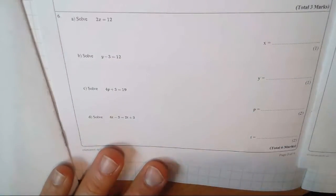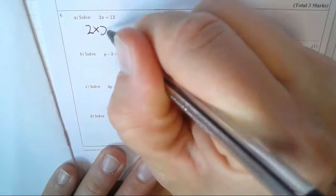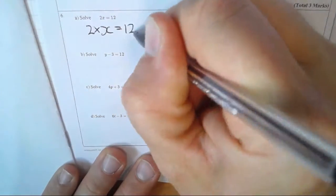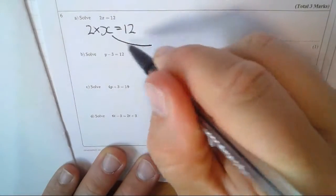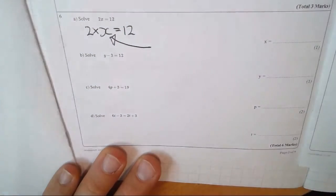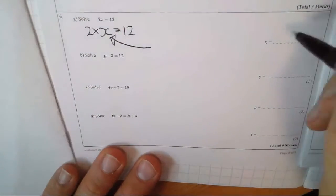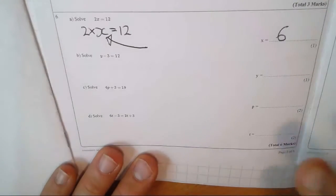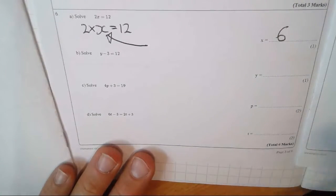6a, 2x equals 12. Well guys, 2x means 2 times by x is 12. So this number, a letter in algebra is a number we don't know yet, so that, hopefully you can spot, must be 6. 2 times 6 gives you 12.